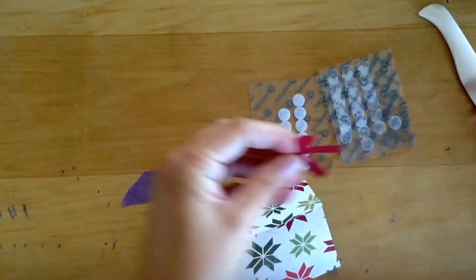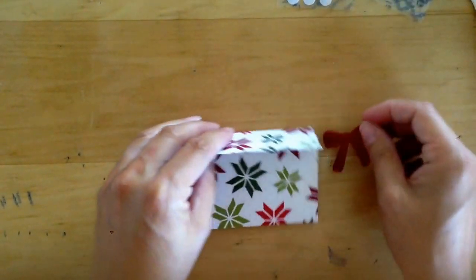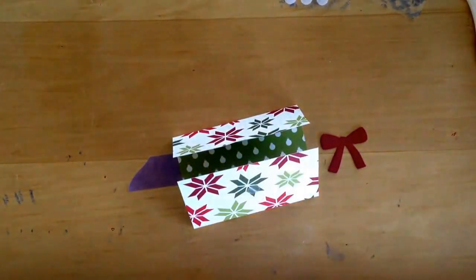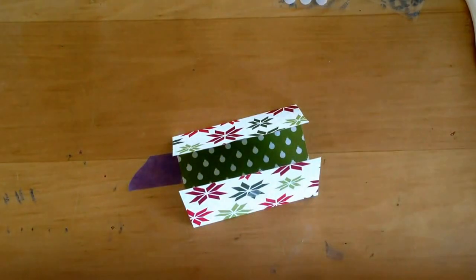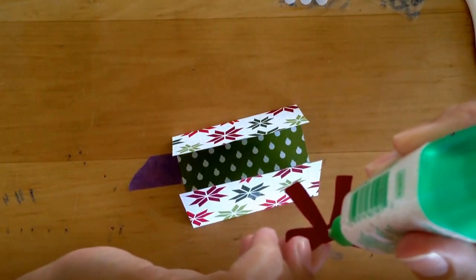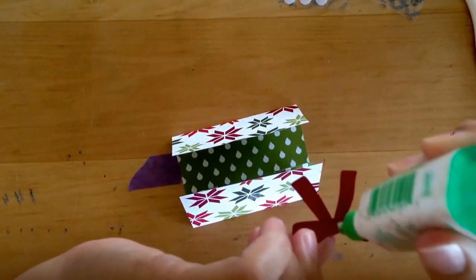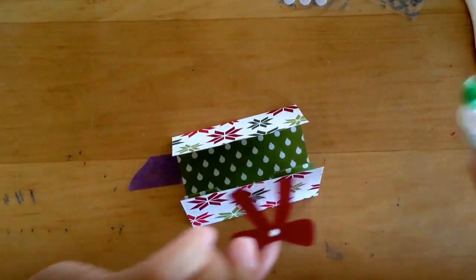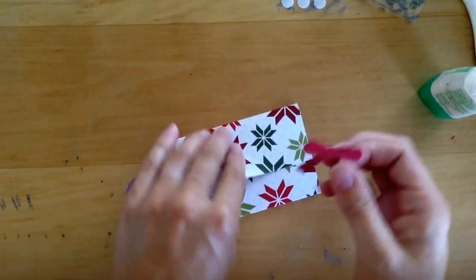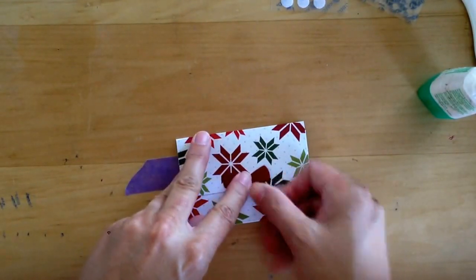And then I'm going to take my bow here from the wondrous wreath and stick him on. Just put a little dot. Like that one. Close that up. And stick him right there.